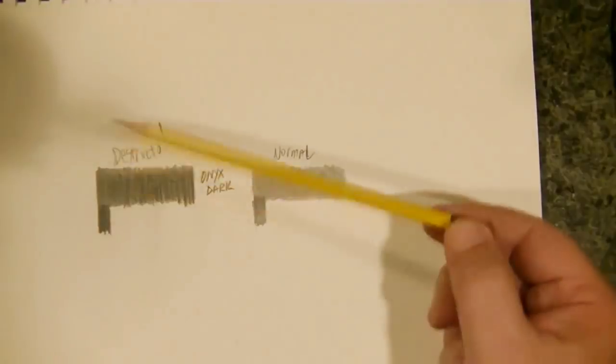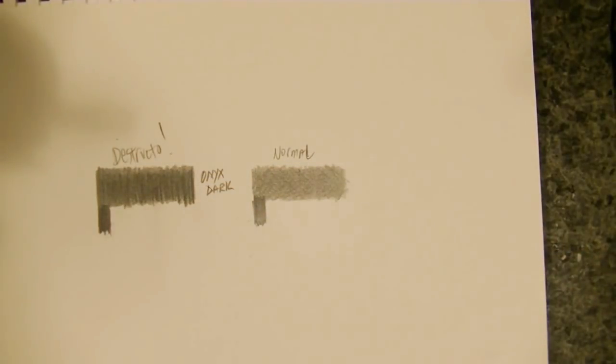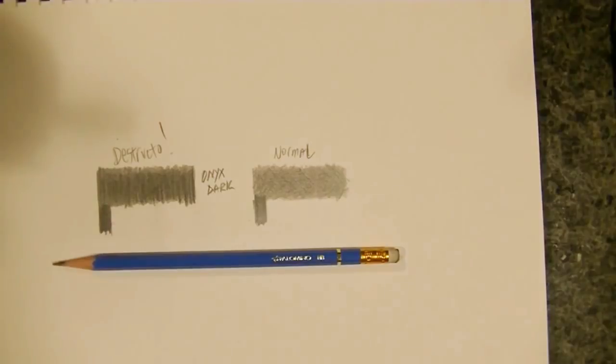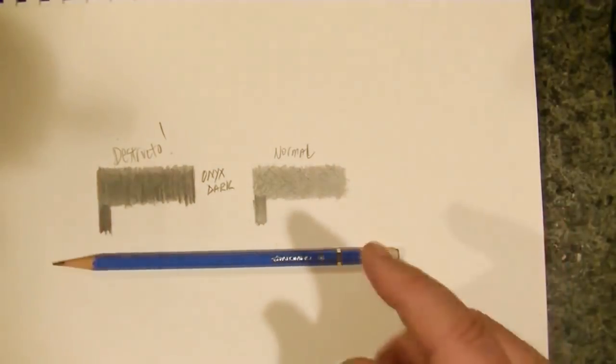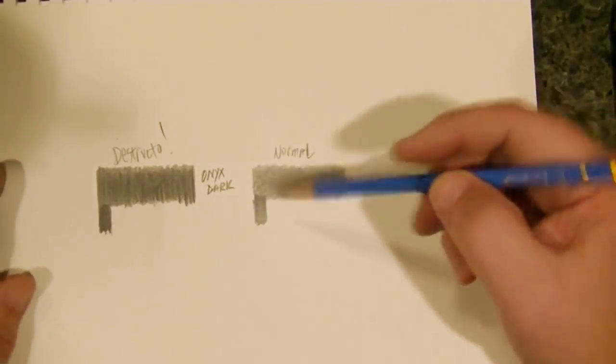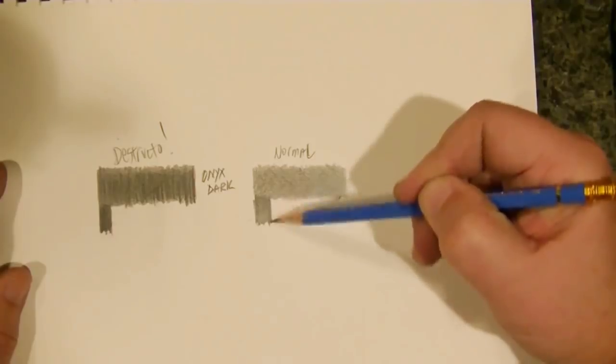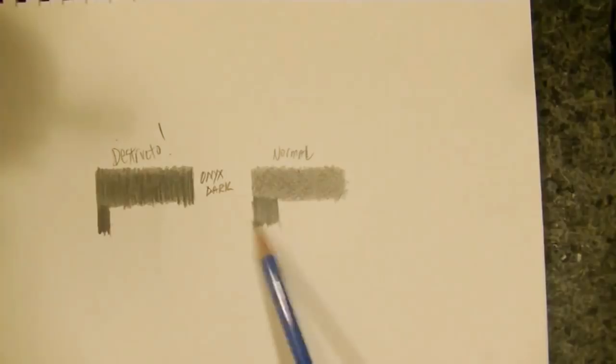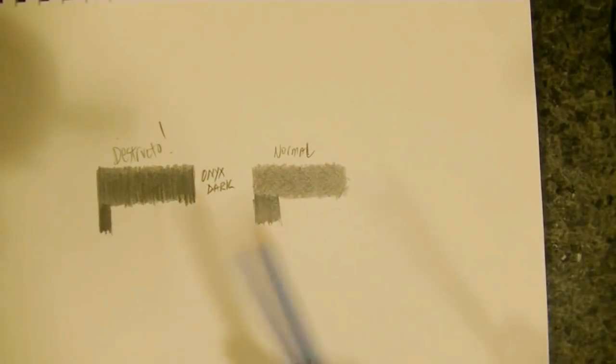Here is a Palomino HB pencil. Palomino cost me about a dollar sixteen a pencil, it's a premium pencil, it's made by the folks who make the Blackwing. You know, the Blackwing 602, really great pencils, but you're going to pay a price for them. Let's see how that compares. Let's do normal pressure. Just like the Dixon, in both cases they're darker than that Derwent dark. And now destructo.